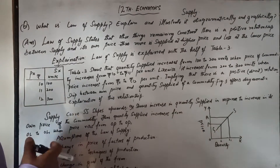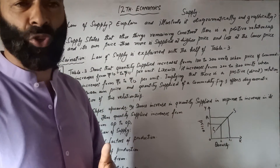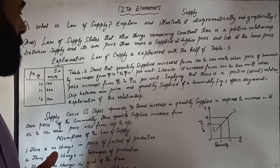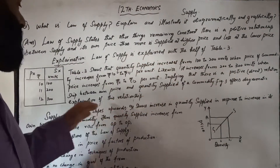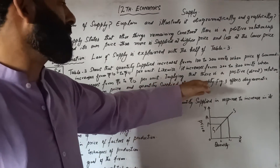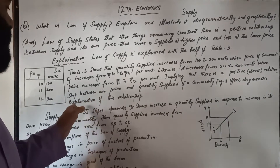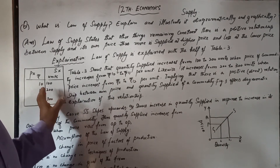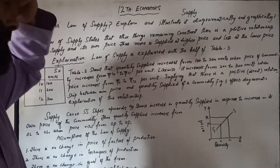So there is a positive or direct relationship between the price of its own commodity and the supply of a commodity, implying that there is a positive or direct relationship between the price and quantity supplied of a commodity. Figure 3 offers the diagrammatic explanation of this relationship between supply and price.